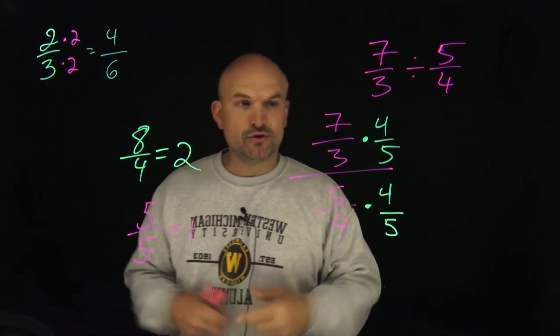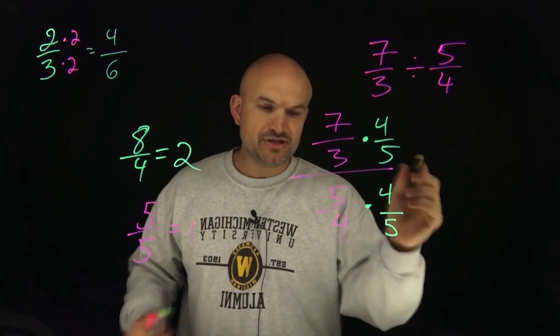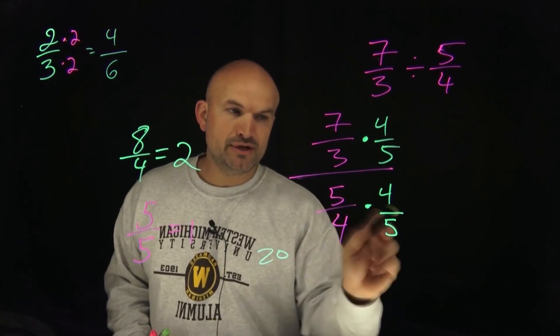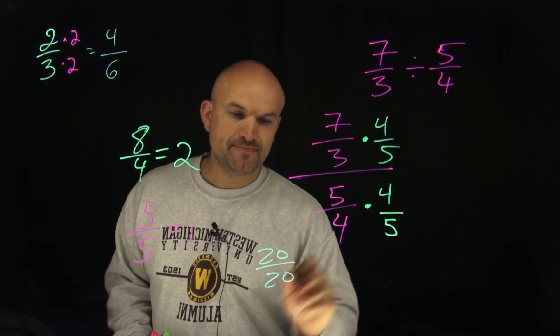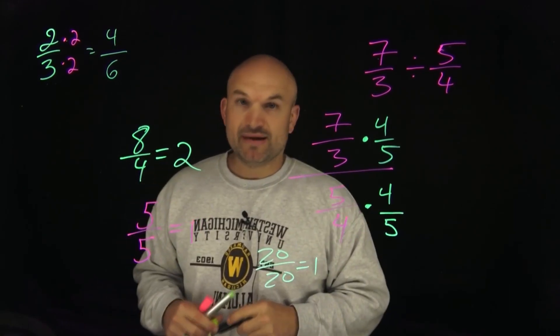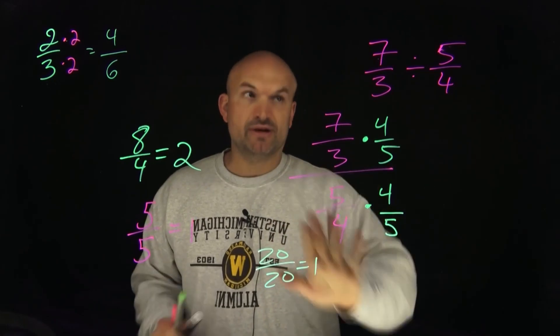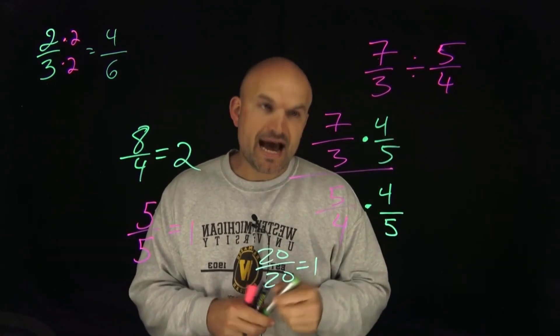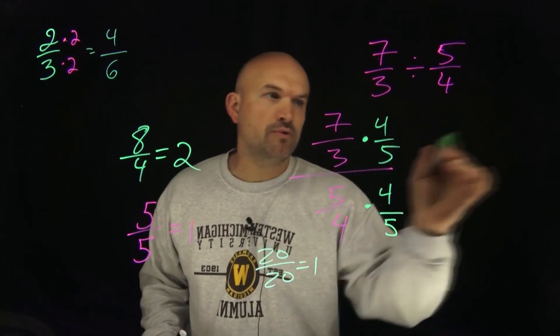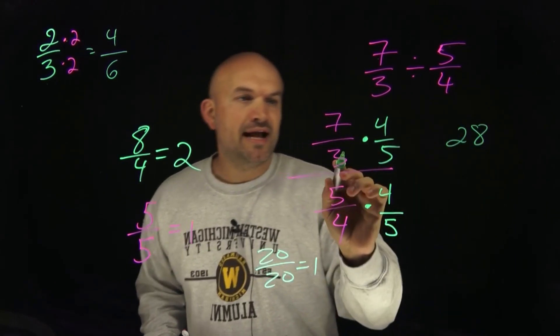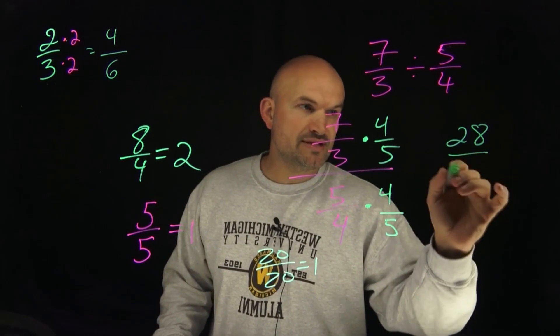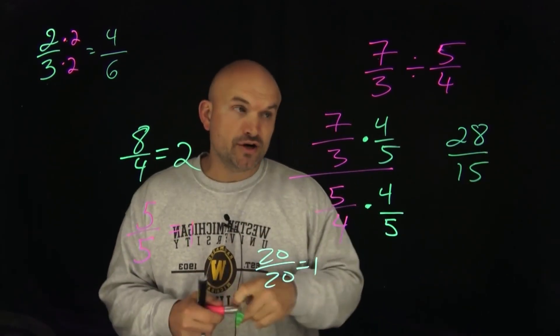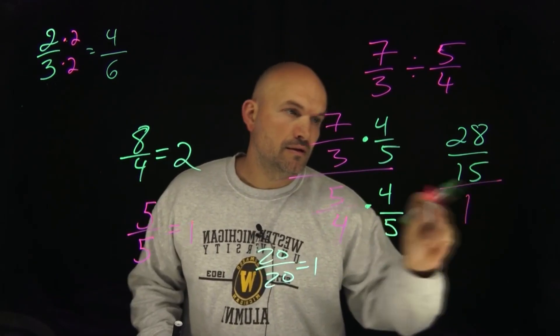Now, the important thing, the kind of the untold story of what truly happens here is just notice here, what happens when you do 5 times 4? Well, that's going to give you a 20. What am I going to do 4 times 5? That's equal to a 20. And that's just equal to a 1. So in reality, this isn't really going away. It's not like we're just doing keep change flip and it's just like magic. Well, no, what's happening here is I'm having 7 times 4, which is going to be a 28 and a 3 times 5, which is now going to give me a 15. And again, that is going to be all over a 1.